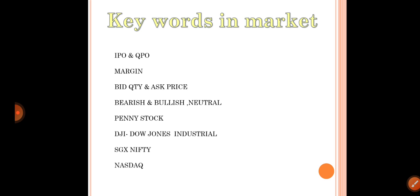Bid quantity is the buying price and asking price is the selling price. Bid means the buyer's price; asking price is the seller's price. If you buy a stock, the asking price person gives you the stock — that is bid and ask. Bearish means the market is going down — the bear pulls stock prices lower — and bullish means the market is going up. Neutral means flat trading.